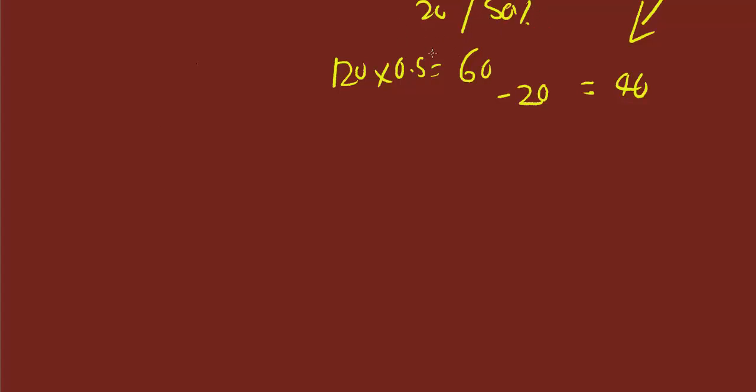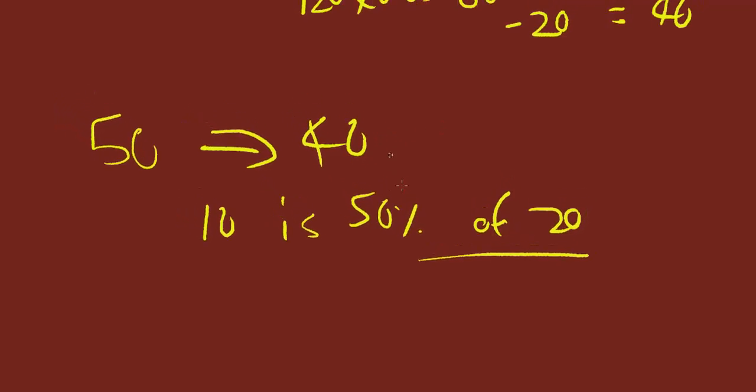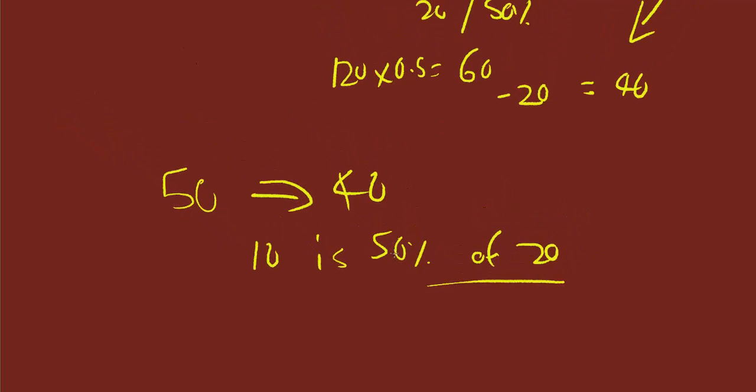So in this example, the enemy's final armor went from 50 to 40. That's a difference of 10. 10 is 50% of 20, so your flat armor penetration is now 50% more effective. That's the easy way to figure it out.